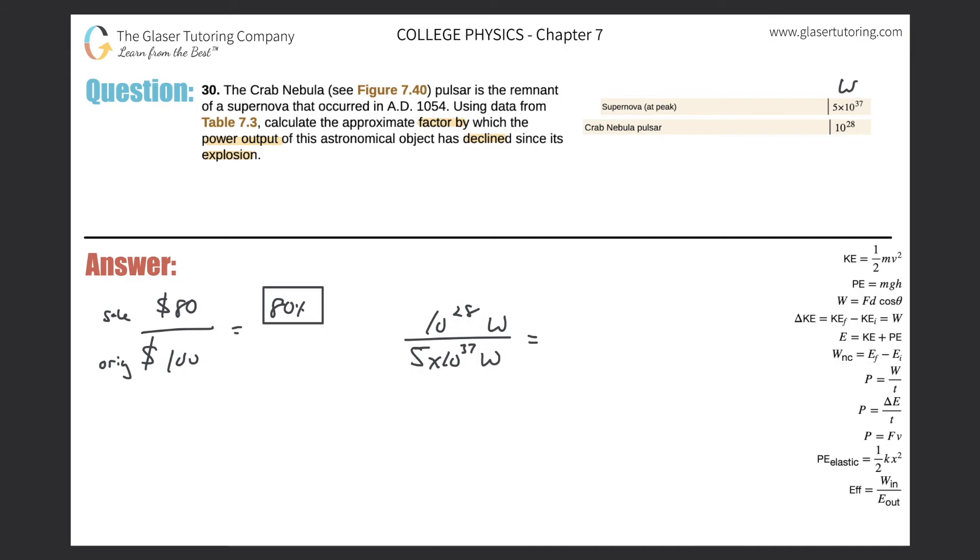So simply take 10 raised to the 28 and divide it by 5 times 10 to the 37th. We get a value of 2 times 10 to the minus 10.